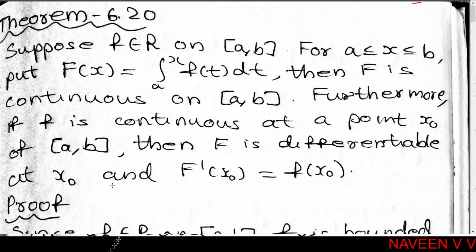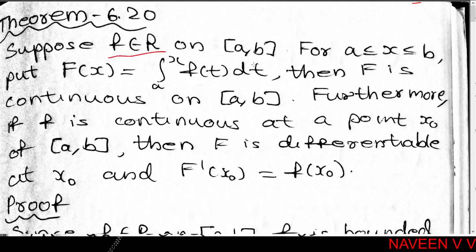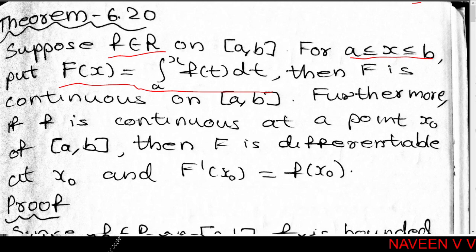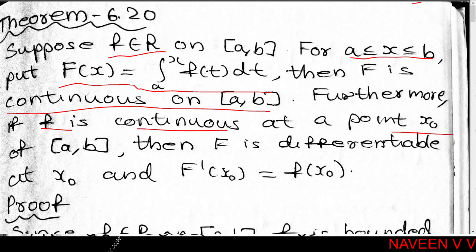Next, Theorem 6.20. Suppose f belongs to R on closed interval [a,b]. For a ≤ x ≤ b, put capital F of x equal to the integral from a to x of f(t) dt. Then capital F is continuous on [a,b]. Furthermore, if f is continuous at a point x₀ belonging to [a,b], then capital F is differentiable at x₀, and F'(x₀) = f(x₀).